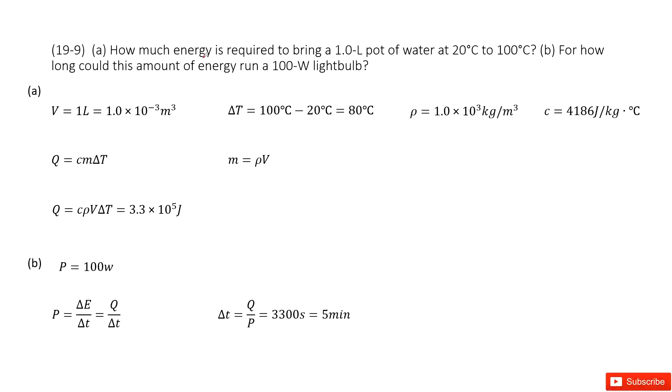We can see the first one we need to find the energy required to bring 1 liter pot of water at the initial temperature 20 to final temperature 100 centigrade. So now we can see the heat should be CmΔT, the first law of thermodynamics.